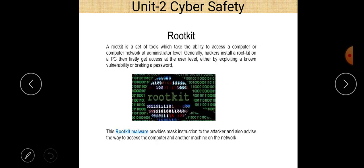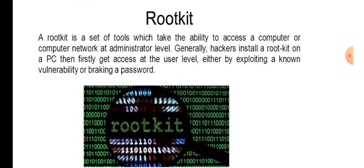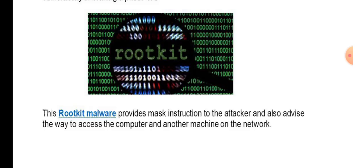Our last topic is Rootkit. A rootkit is a set of tools that provides the ability to access a computer or computer network at an administrator level. This rootkit malware provides masked instructions to the attacker and advises ways to access the computer and other machines on the network. Generally, hackers install a rootkit on a PC by first gaining user-level access, either by exploiting a known vulnerability or breaking a password.